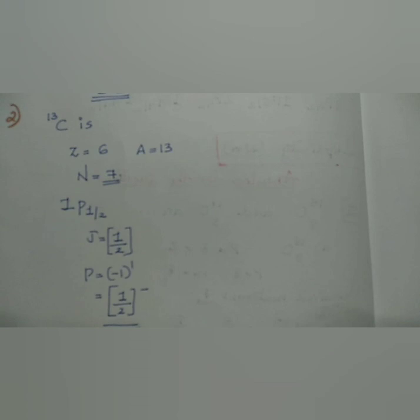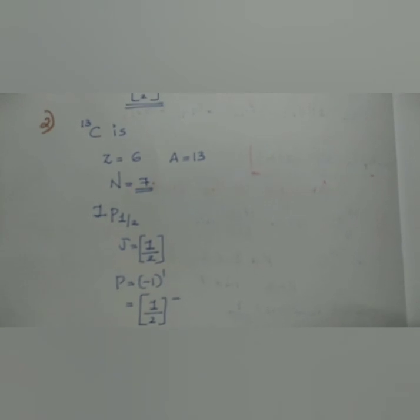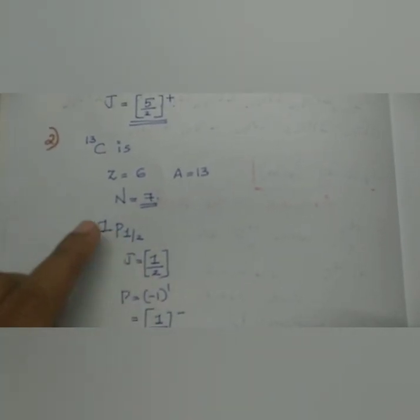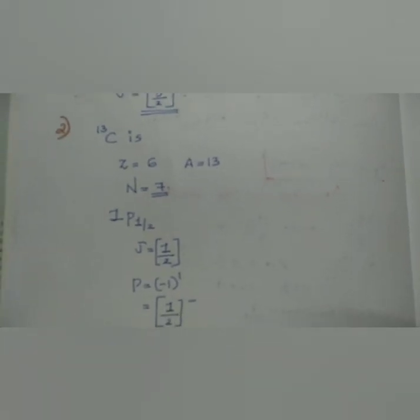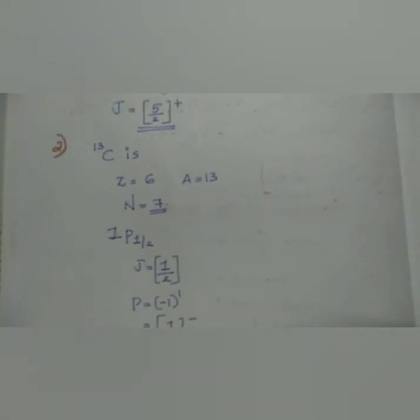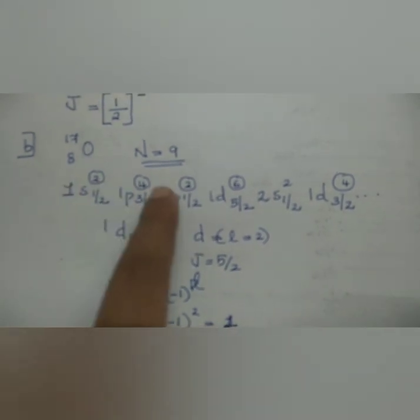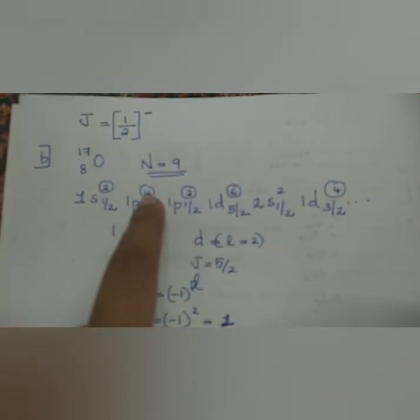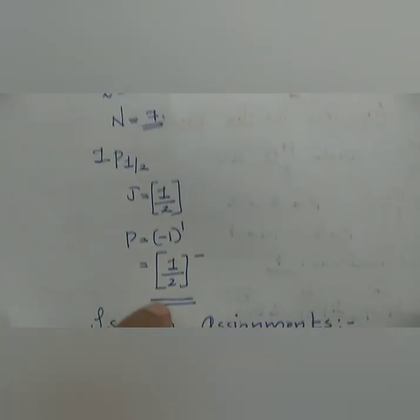Here is Carbon-13. The atomic number is 6 and mass number is 13. So the neutron number is odd, which is 7. Even number protons, odd number neutrons means odd nucleons determine the spin. N equals 7. Configuration: 1s1/2, 1p3/2, 1p1/2, 1d5/2 with 2, 4, and 1 unpaired. The 1p1/2 has the unpaired nucleon. Corresponding j value is 1/2. P has l value 1, so parity is minus 1 raised to 1, which is 1/2 minus.